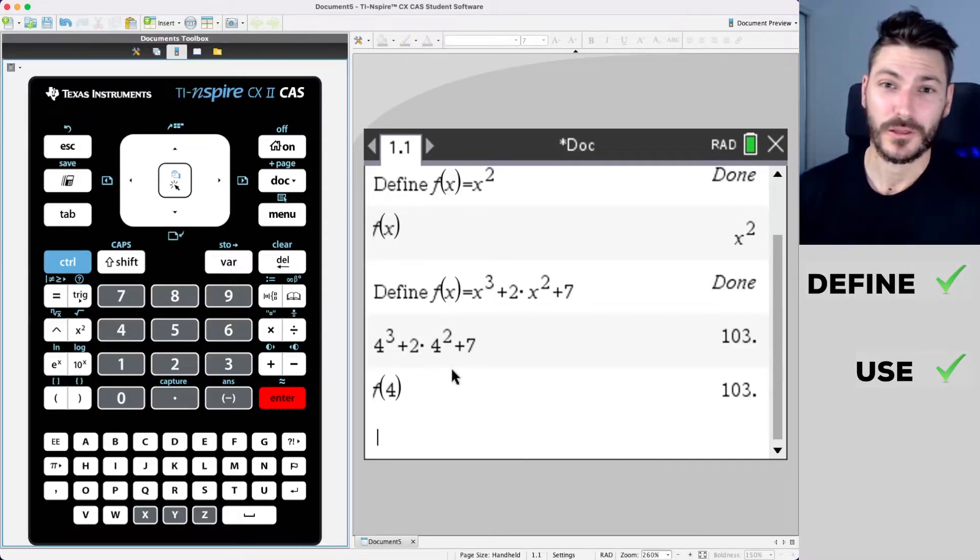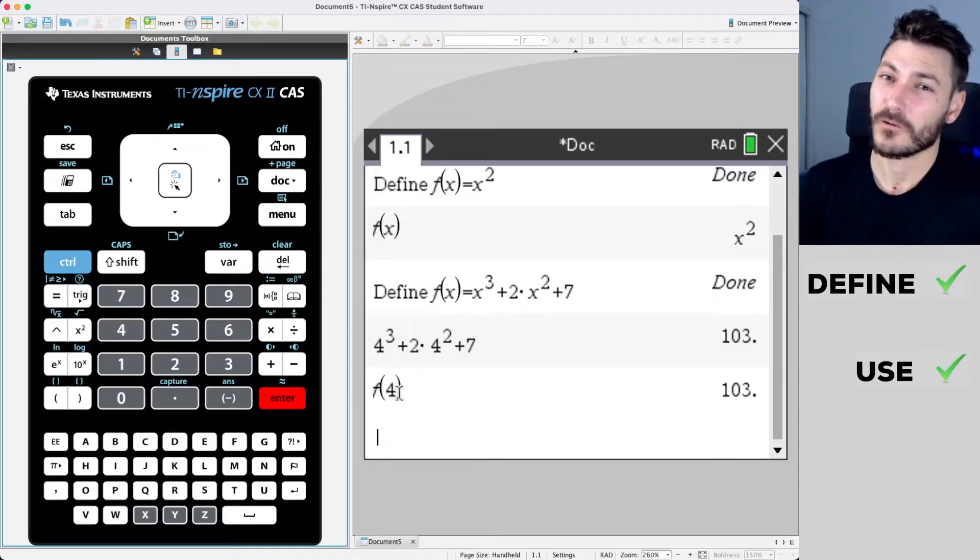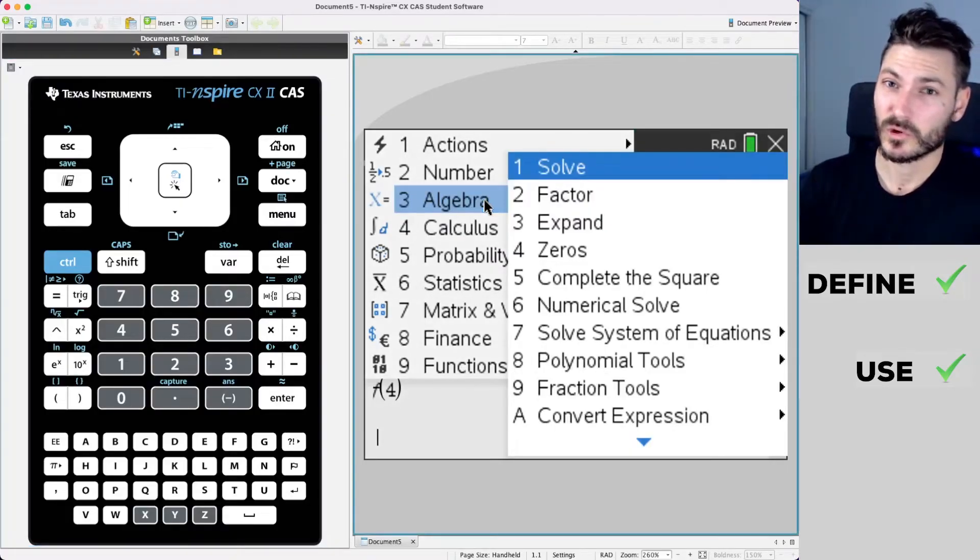The final trick from the thumbnail that we are going to use here is solving this function for different values. So we've seen that when the function is evaluated at 103, the x value to support that is 4. Okay. So what I'm going to do now is go menu, algebra. And again, this will work in test mode and click solve.